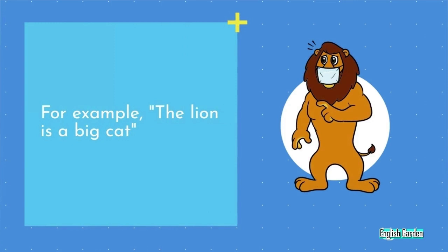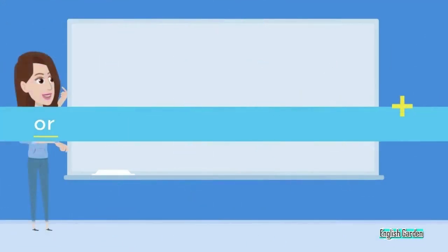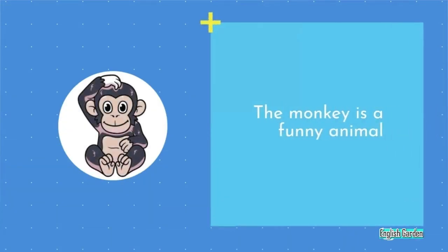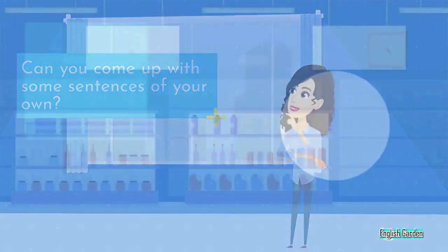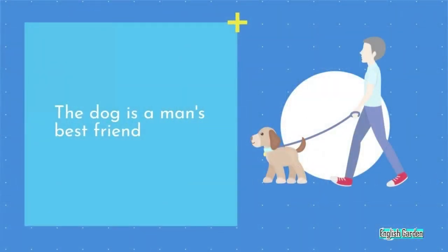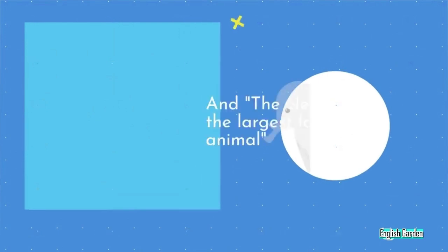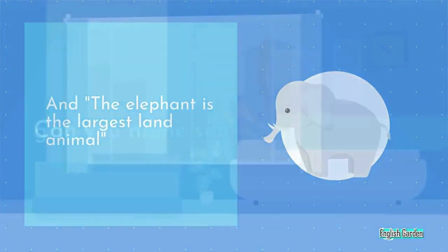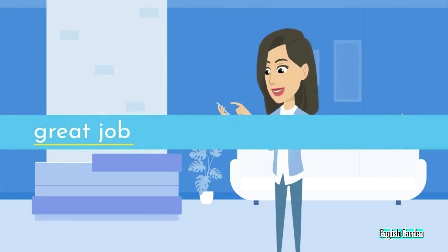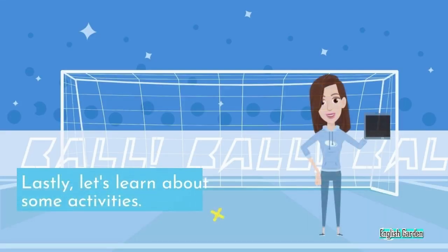For example, the lion is a big cat, or the monkey is a funny animal. Can you come up with some sentences of your own? The dog is a man's best friend, and the elephant is the largest land animal. Great job!